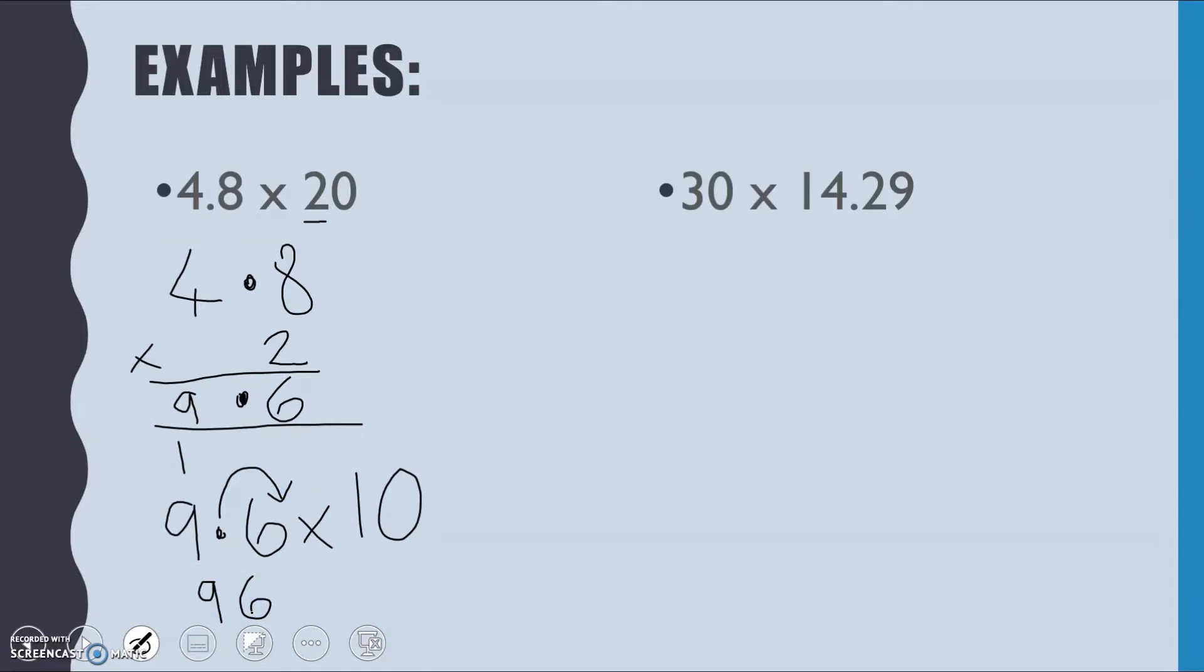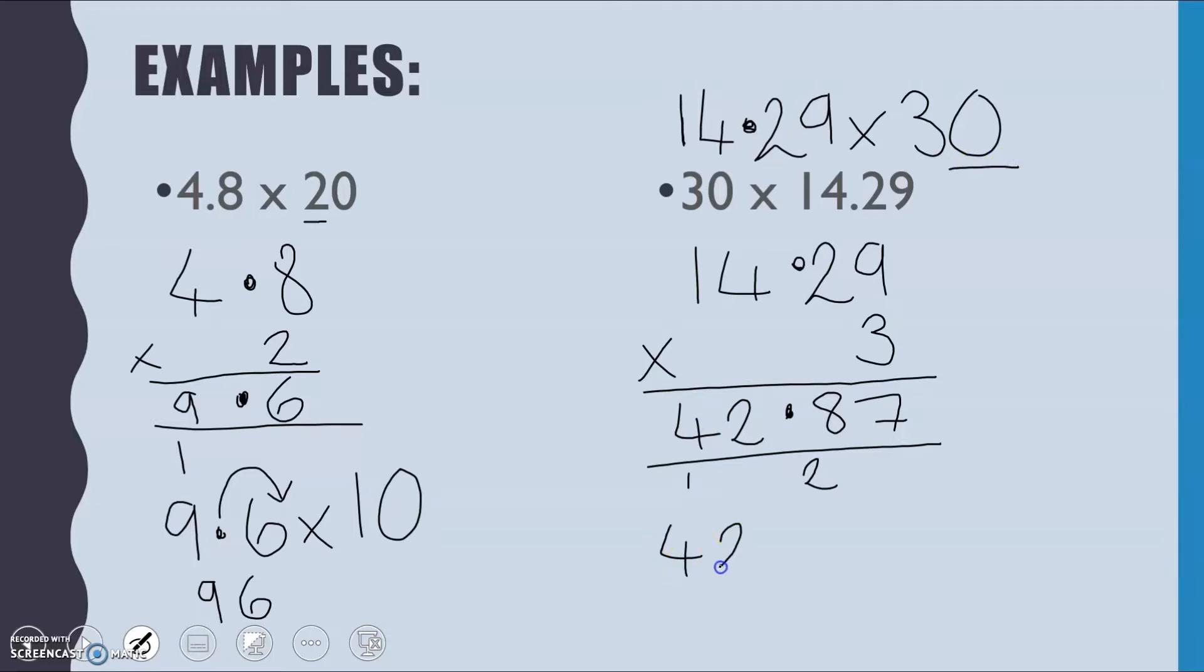For the second example, remember it doesn't matter what way round we do it. So that is really just the same as your 14.29 times by 30. So I'm going to take my decimal, 14.29, and we are going to times it by 3. Three nines give me 27. Three twos give me 6 plus another 2 is 8. Line up that decimal point. Three twos give me 12. Carry the 1. And three ones are 3 plus 1 is 4. So 42.87. But again, we still have to times by this 10 at the end. So 42.87 times by 10. We'll move that decimal point back one in between the 8 and the 7 to give us 428.7 for that answer there.